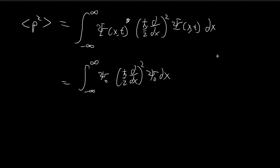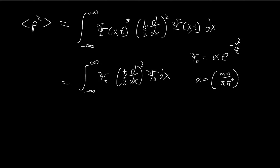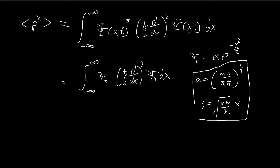Recall that last time we did this substitution to simplify psi naught — we change psi naught into alpha times e to the power of negative y-squared over 2, where alpha is equal to (m omega divided by pi h-bar) to the one-fourth, and y is equal to the square root of m omega divided by h-bar times x. We're going to use this simplification again in this video.